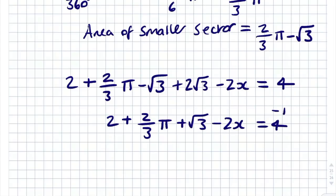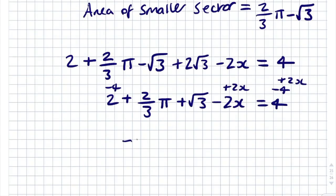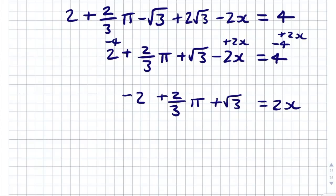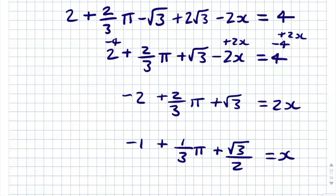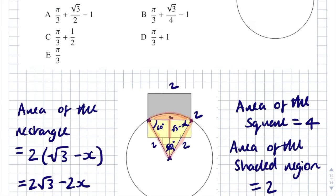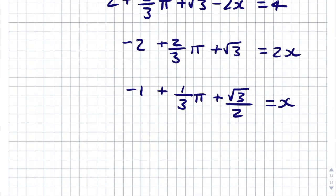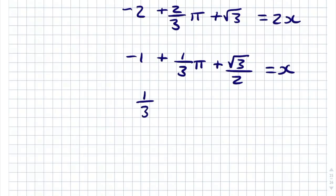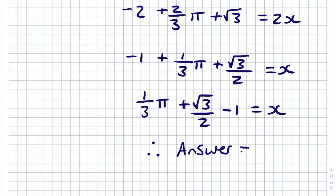Solving for x: subtract 4 from both sides and add 2x to both sides to get 2x = -2 + 2π/3 + √3. Dividing by 2: x = -1 + π/3 + √3/2. Rearranging, this is x = π/3 + √3/2 - 1, which matches answer A. Therefore the final answer is A.